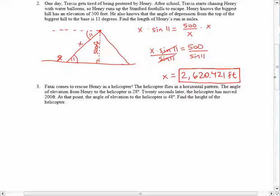The angle of elevation from Henry to the helicopter is 28 degrees. Twenty seconds later, the helicopter has moved 200 feet. At that point, the angle of elevation to the helicopter is 48 degrees. Find the height of the helicopter.